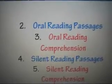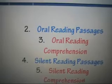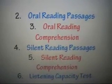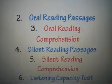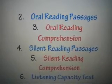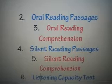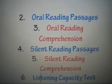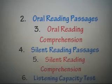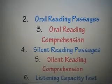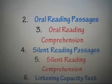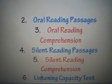Then you begin the silent reading passages at the child's independent, instructional, and frustration levels. Next, you begin the listening capacity test at the child's instructional or frustration level — you read out loud to the child and then ask comprehension questions. The goal is to determine the child's independent, instructional, and frustration levels to identify at what level the child reads best and what books the child can read.